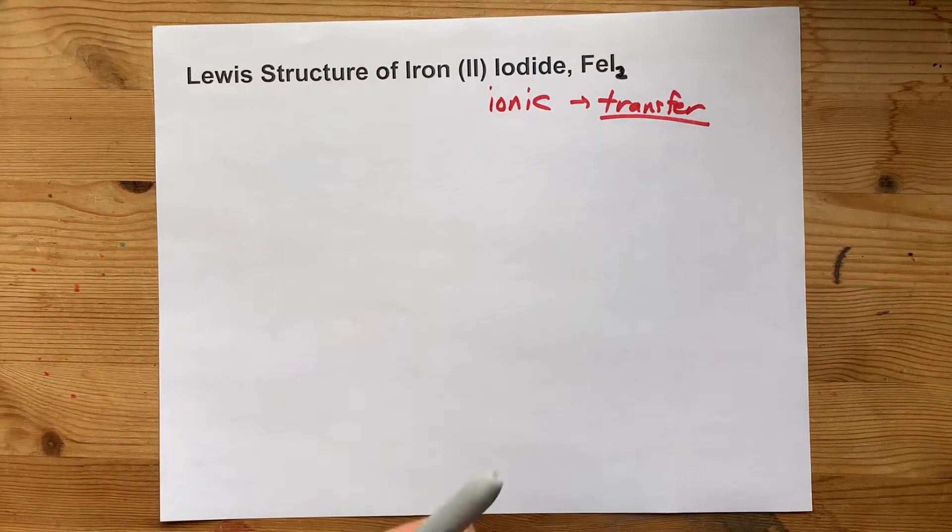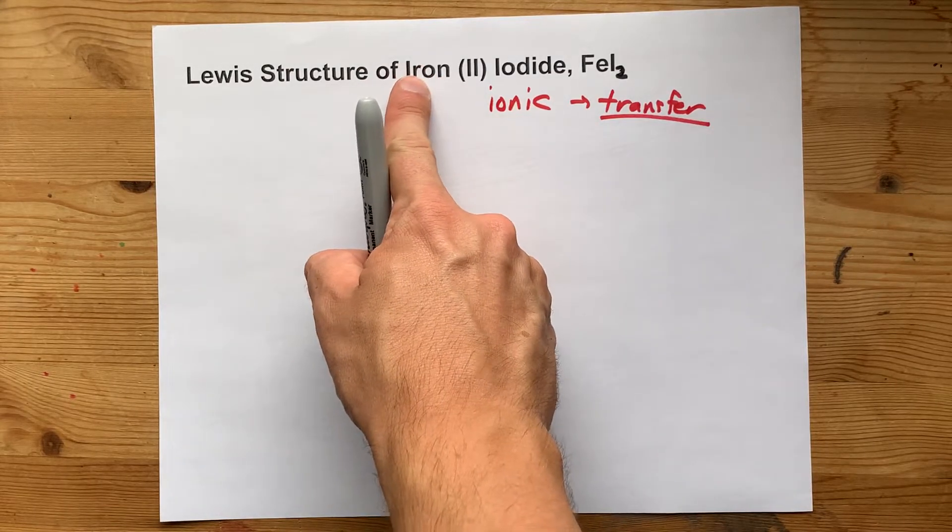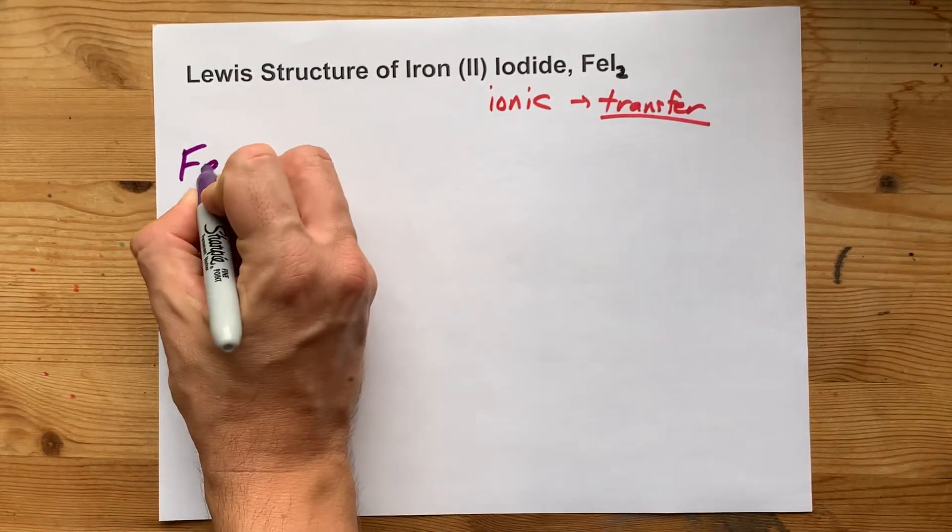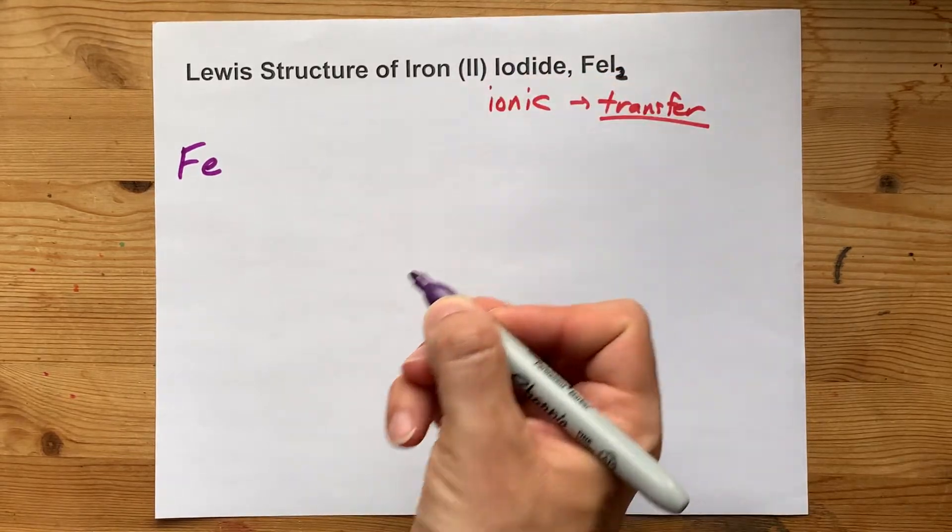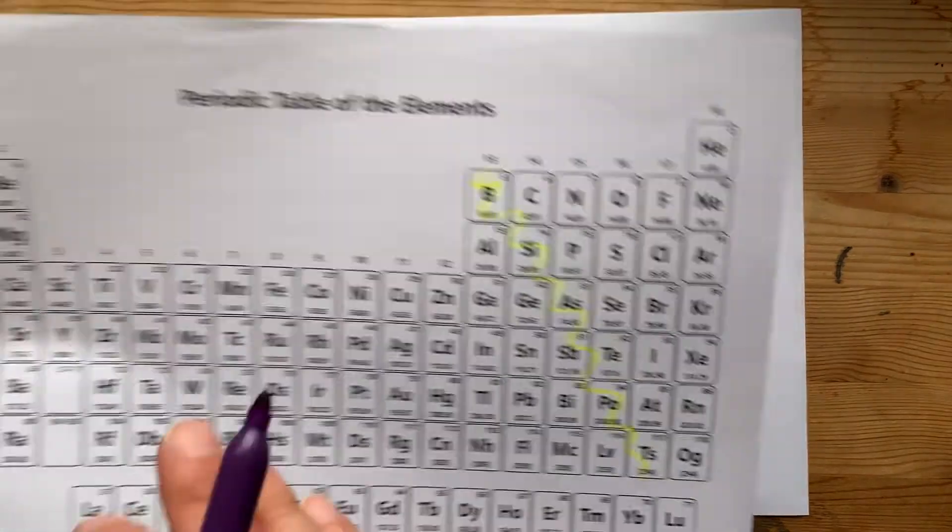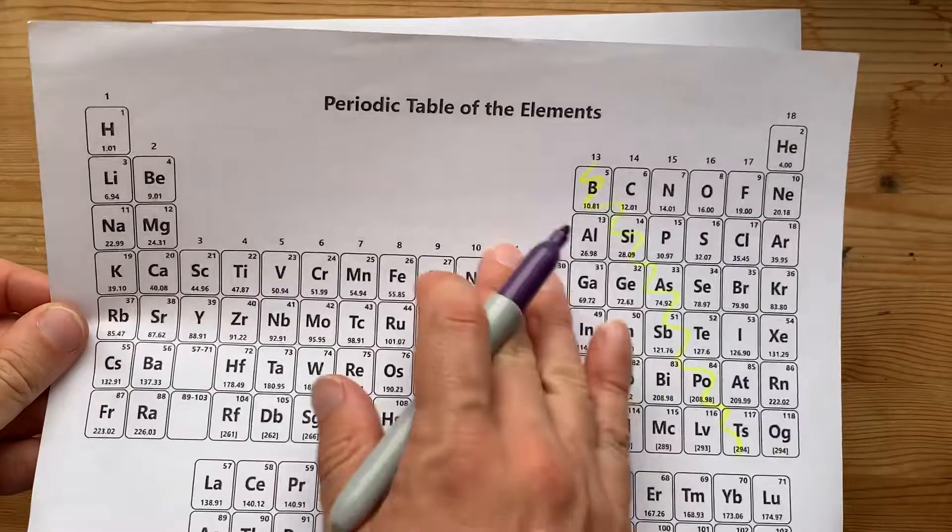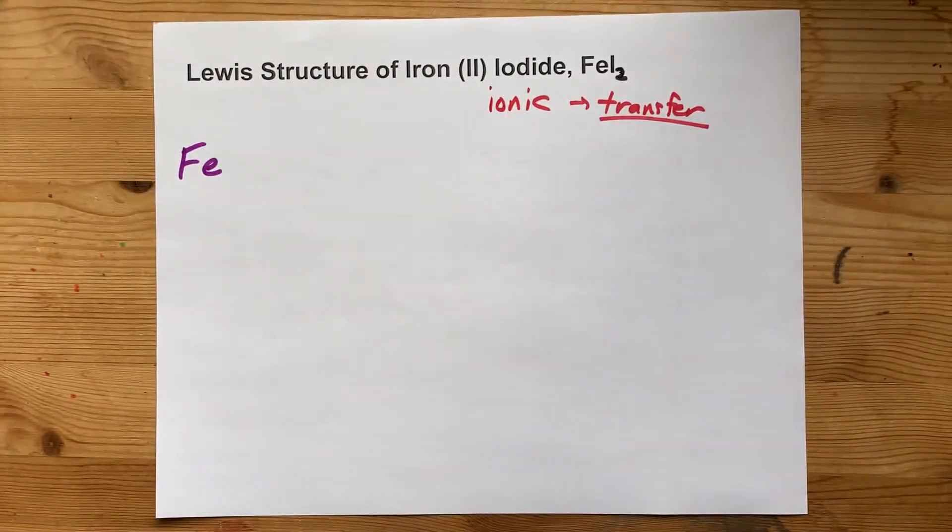So what are you going to do? You're going to draw yourself an iron atom, that's Fe, with this many electrons. Now, I only do this for transition metals, the ones in this block that can have more than one possible charge.